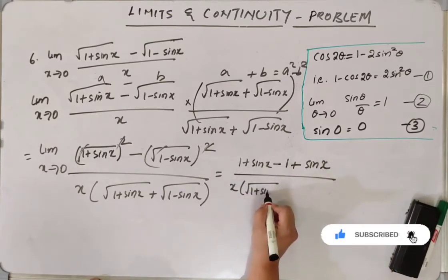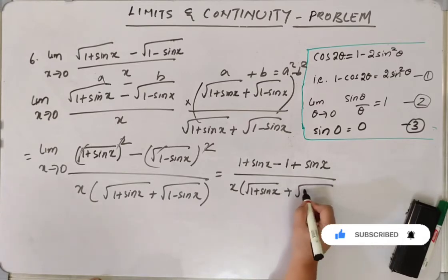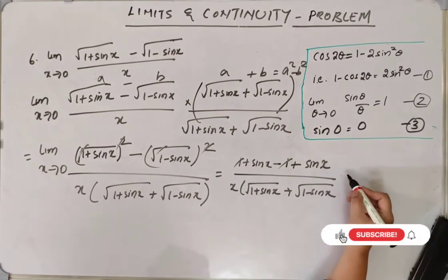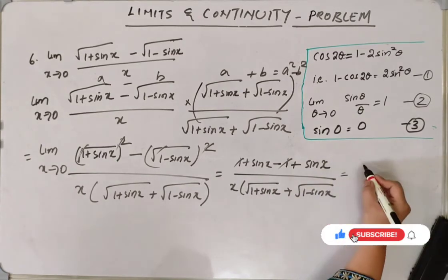1 plus sin x. So 1 and 1 gets cancelled. So we will get 2 sin x by...